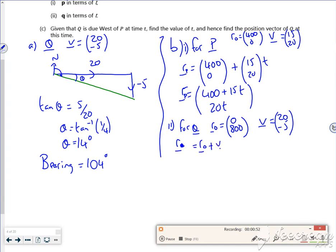is R0 plus Vt, so its position is the initial R0 800 plus 20 minus 5.